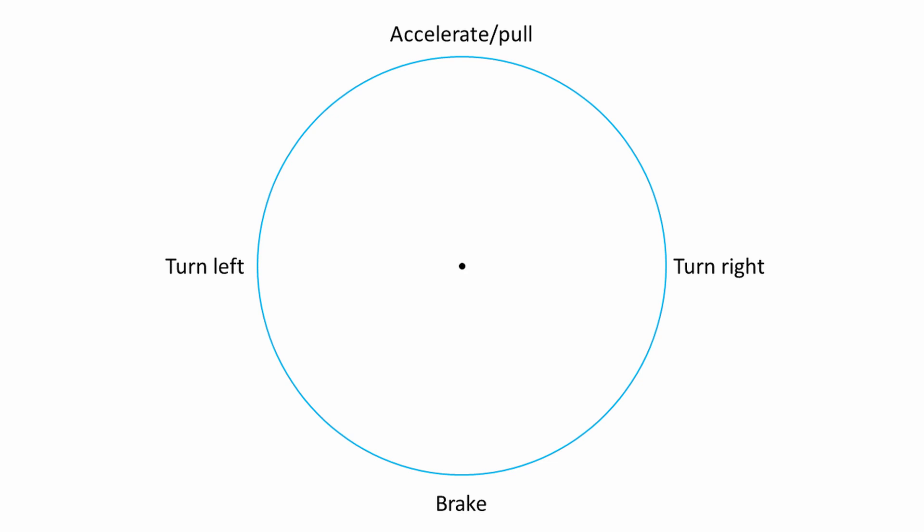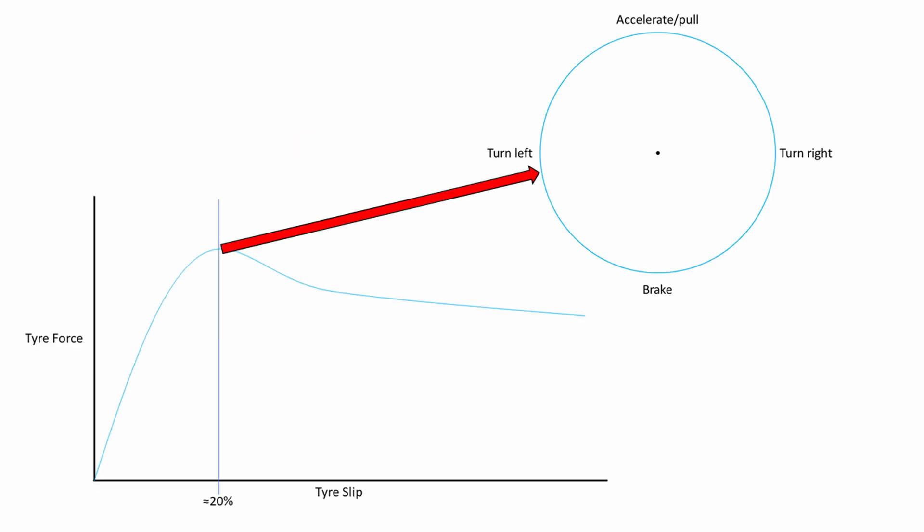The idea of the friction circle is that it provides a mathematical description of the amount of force the tyre is able to develop. At the top of the circle we have pull or acceleration - longitudinal force accelerating the vehicle. At the bottom we have braking force. On the right we have turning right and on the left we have turning left. The diameter of the circle corresponds to the height of that maximum force point on the slip pull graph.